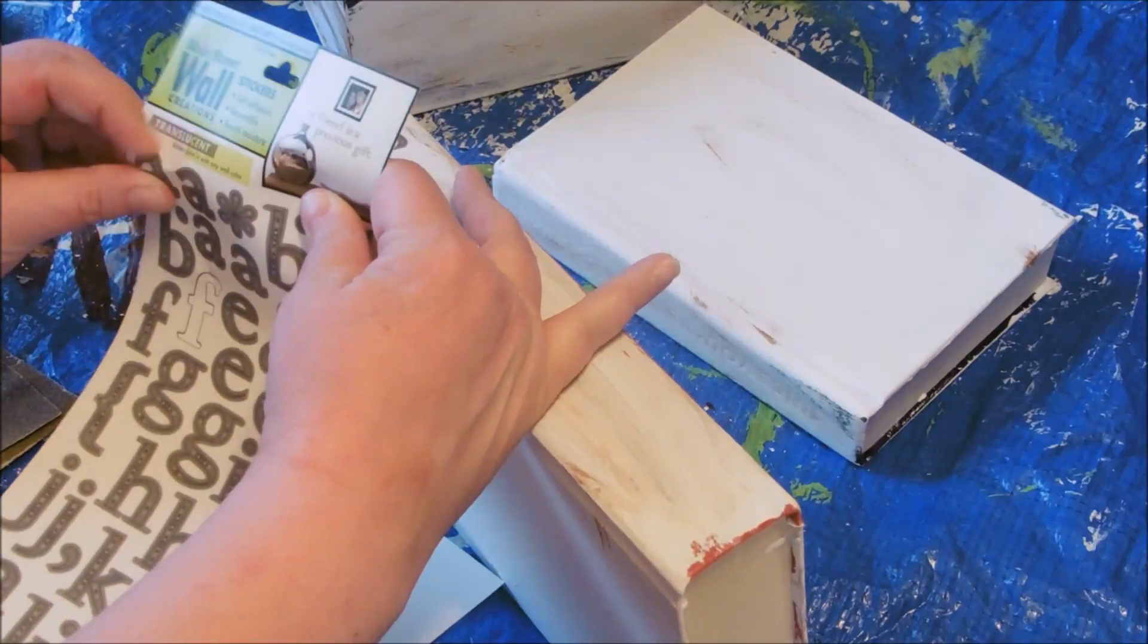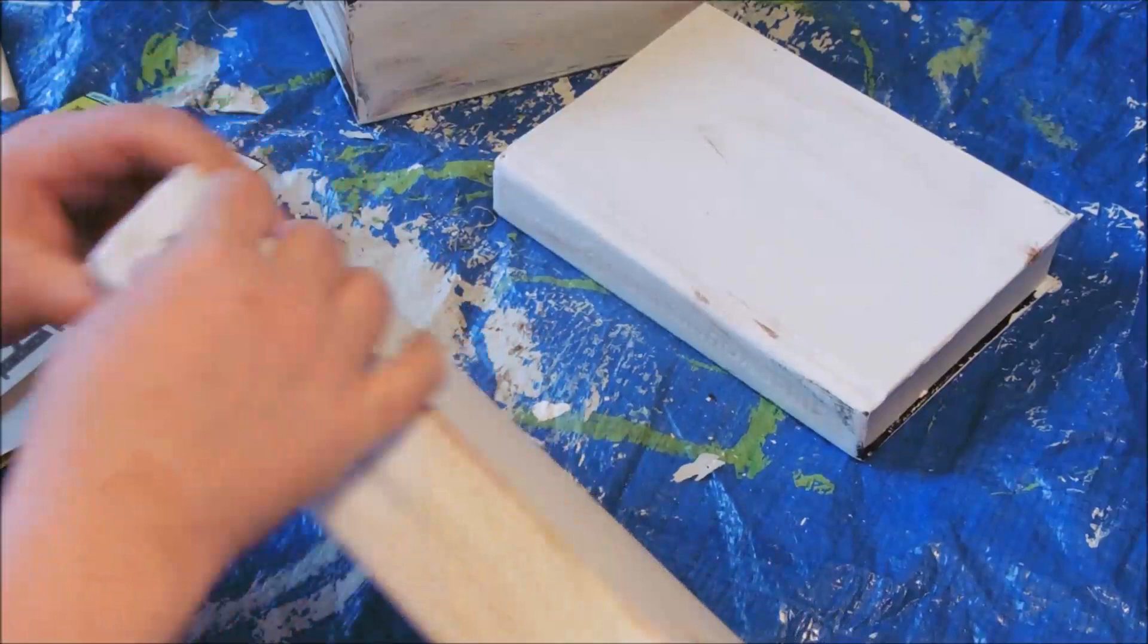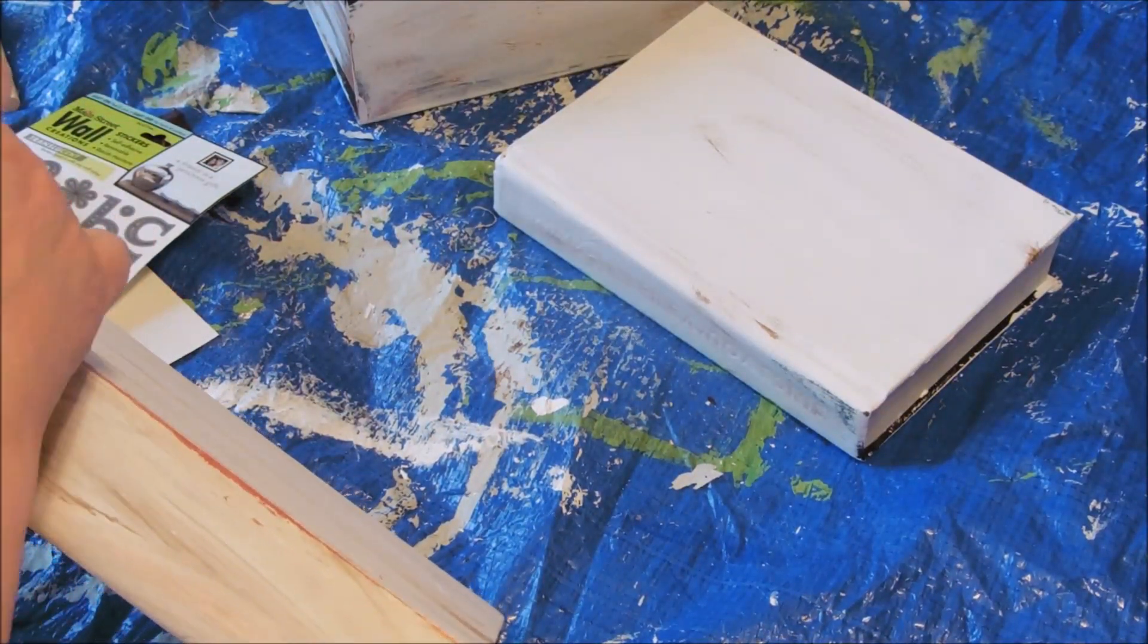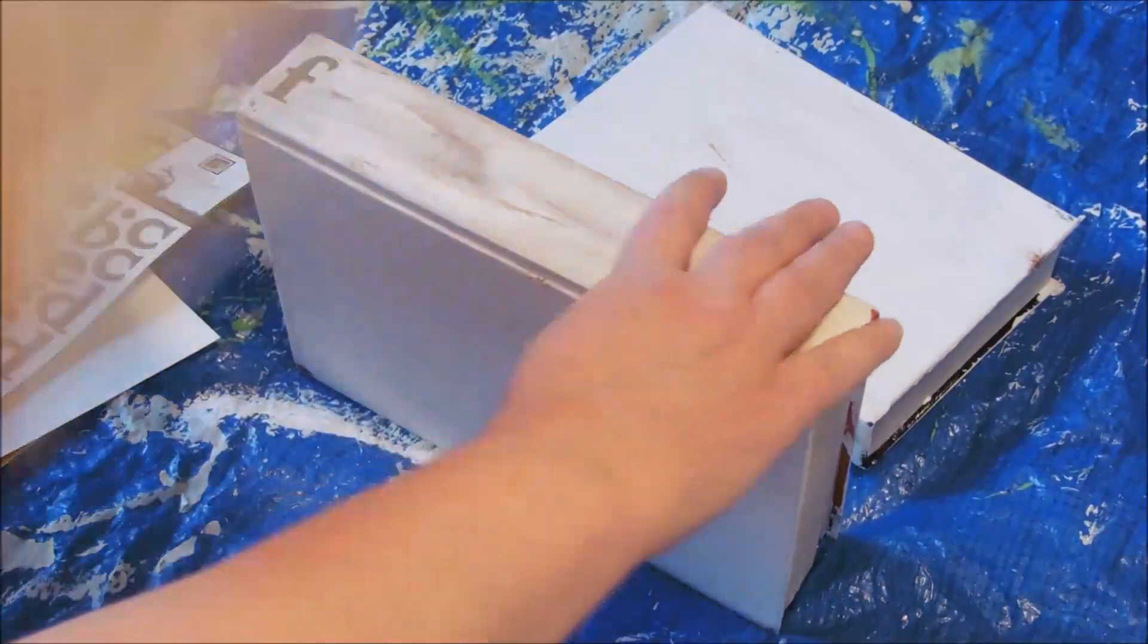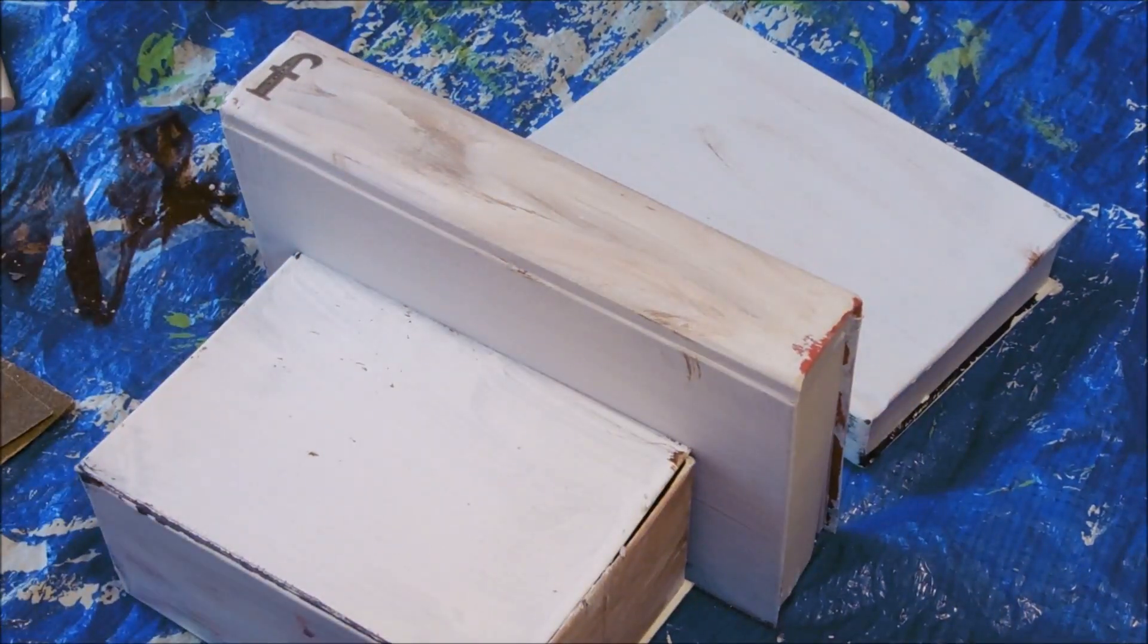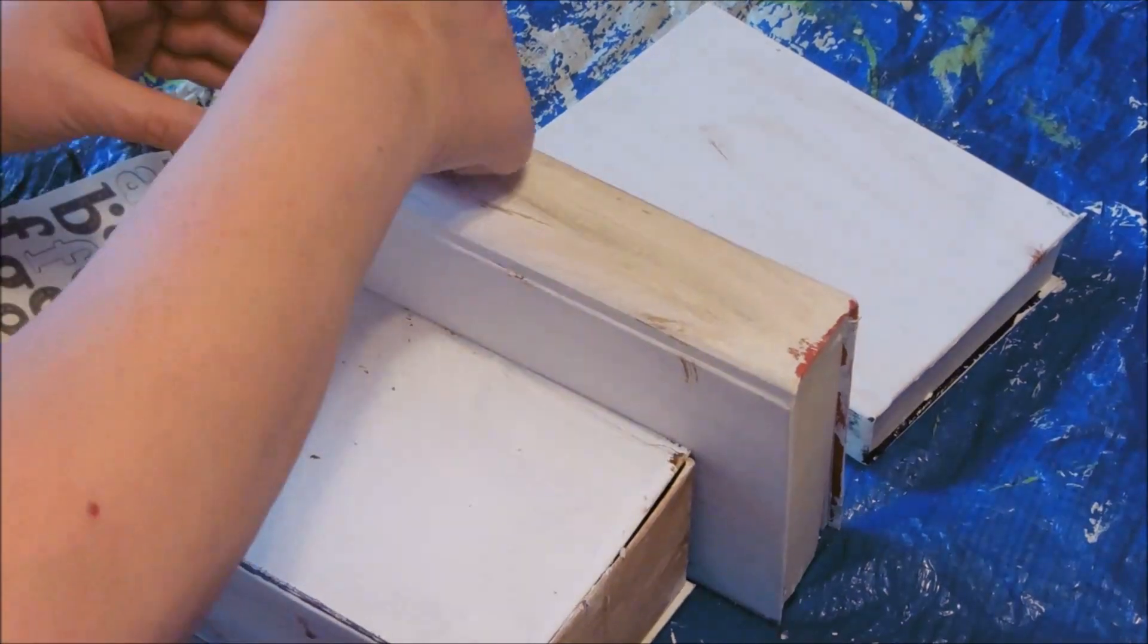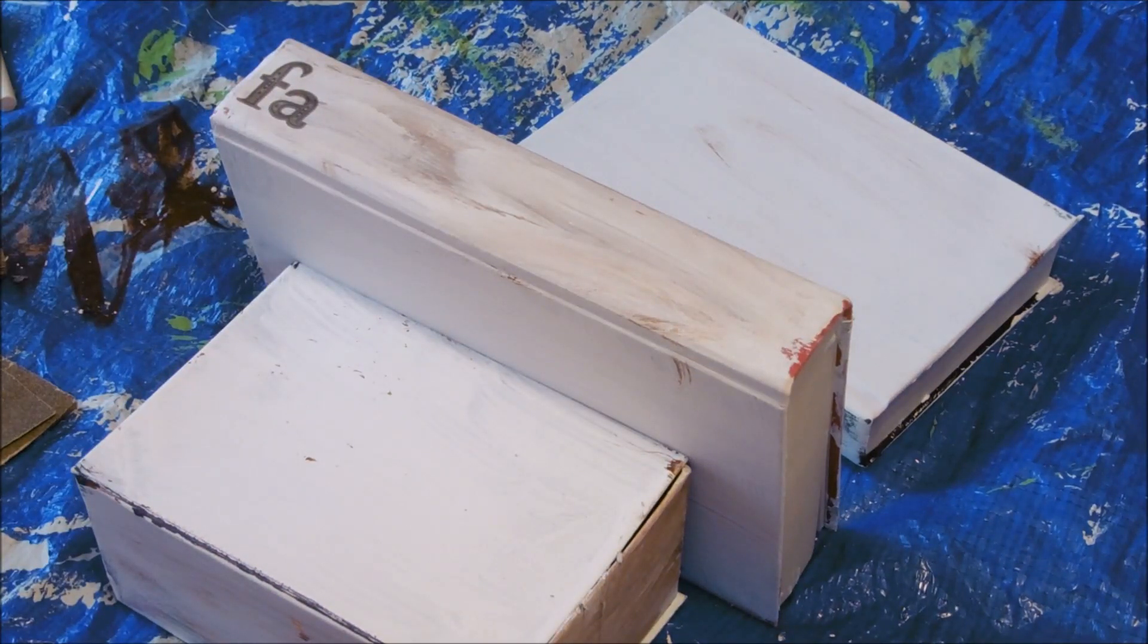If you have great handwriting or you can do the Rae Dunn sort of font or whatever you like, write it on there by all means with a Sharpie marker or a paint marker, whatever kind of font you like. Or again, at the Dollar Tree you can find letters all the time.